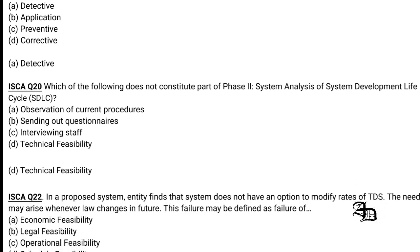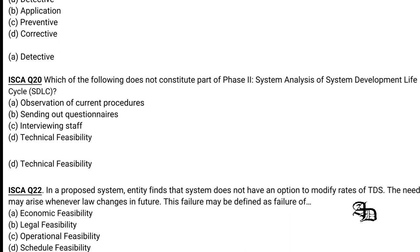Question 9: In a proposed system, an entity finds the system does not have an option to modify rates, and rate modification is tedious. The need may arise because future laws may change. This failure is best classified as legal feasibility, not economic, operational, or schedule feasibility. Option B is the correct answer.